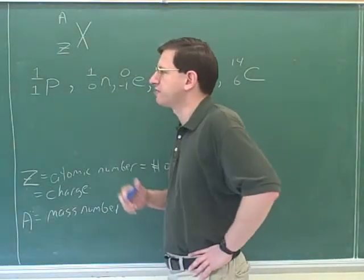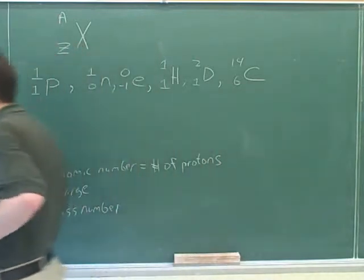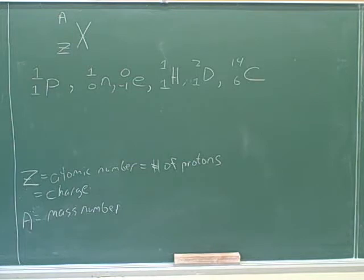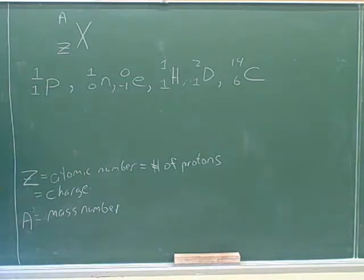We need to learn about different types of particles: alpha, beta, and gamma particles. These particles are emitted during radioactive decay of a nucleus. Some nuclei are unstable, meaning they only last for a while before turning into something else. An unstable nucleus decays into something else, and when it decays, it emits particles. There are different types of particles that can be emitted.